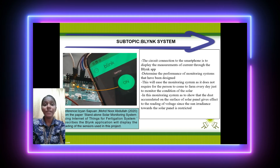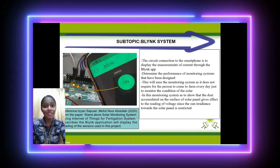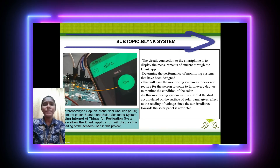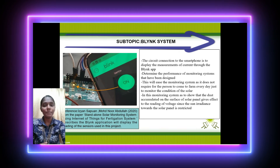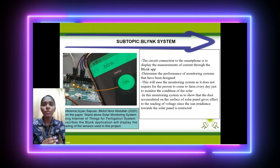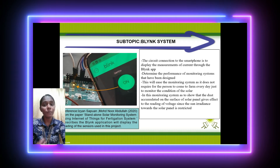The Blink app will display the reading of AC and DC current. This will simplify the monitoring system since it does not require a person to visit the farm every day to monitor the power output rate.